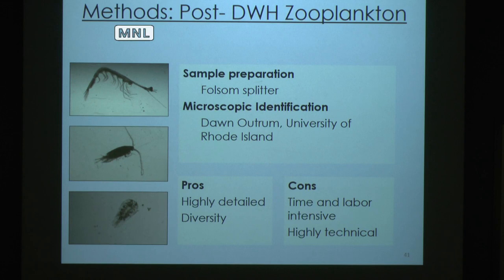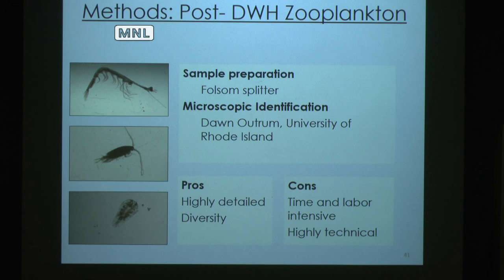For the microscopy method, we also split the sample down to a sub-sample. These were shipped to Dr. Diane Auttram at the University of Rhode Island, where she identified them down to genus and species under a microscope. I then took all those groups and collapsed them into the same groupings as the coarser ZooScan so they could match up. This method has more detail and more diversity, but a con is that it takes a lot of time, is labor intensive, and requires a lot of technical skill.